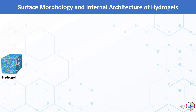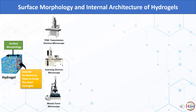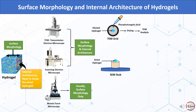The next characterization examines surface morphology and internal architecture of hydrogels. Major techniques used are transmission electron microscopy (TEM), scanning electron microscopy (SEM), and atomic force microscopy (AFM). TEM and SEM reveal both surface morphology and internal architecture, while AFM usually shows surface morphology only. For TEM sample preparation, diluted hydrogel is placed on a TEM grid, phosphotungstic acid solution is applied, and the sample is dried before analysis. For SEM, the hydrogel is dried, placed on a SEM stub, gold-coated, then analyzed.